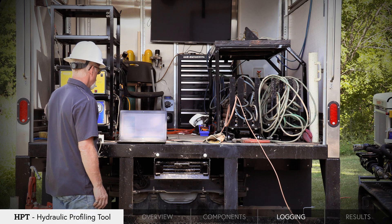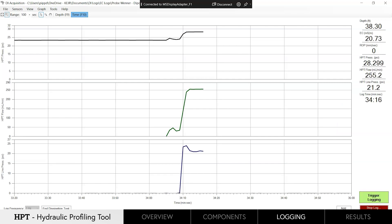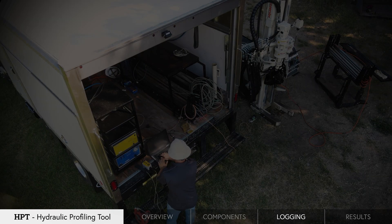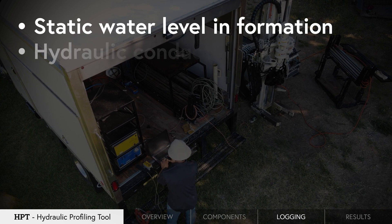Dissipation tests need to be performed below the water table and are best in zones of higher permeability where the injection pressure can dissipate off quickly once the flow is shut off. This information gives us an accurate measurement of static water level in formation and calculated hydraulic conductivity.